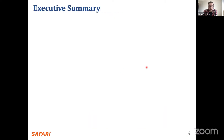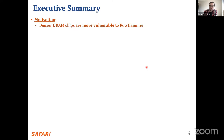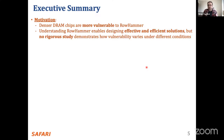As DRAM chips get denser, they become more vulnerable to row hammer because DRAM cells, word lines, and bit lines are all coming closer together, and you can store less charge in a DRAM cell. This causes the vulnerability to worsen. Understanding row hammer vulnerability in many aspects is important — it's a very relevant problem today, because without understanding it well we cannot design effective and efficient solutions to secure our systems.